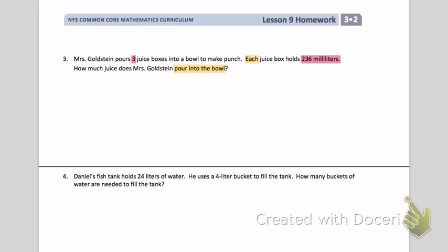Mrs. Goldstein pours three juice boxes into a bowl to make punch. Each juice box holds 236 milliliters. How much juice does Mrs. Goldstein pour into the bowl? So I've highlighted for you some important information, which is 236 milliliters in each juice box, and that there are three juice boxes total.